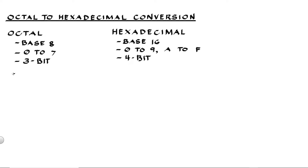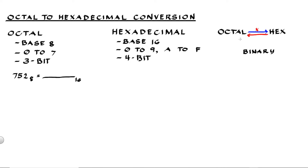For our conversion, let's say we have 752 octal and convert it to hexadecimal form. Direct conversion from octal to hex or hex to octal is not possible. First, you have to convert octal to binary, then binary to hex. And if you want to convert hex to octal, you do the same process but in the opposite direction.